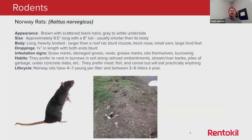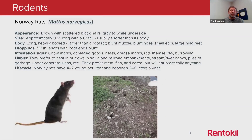The next rodent we talk about is the Norway rat. Norway rats are much larger than the house mouse — typically nine to ten inches long with a tail that can be up to eight inches, though the tail is always shorter than the body. They have a more robust body with small ears, small eyes, and large hind feet. Again, if you're trying to figure out whether something is a baby rat or a mouse, look at the feet — that's one of the key indicators.